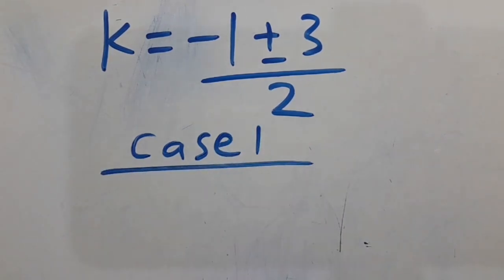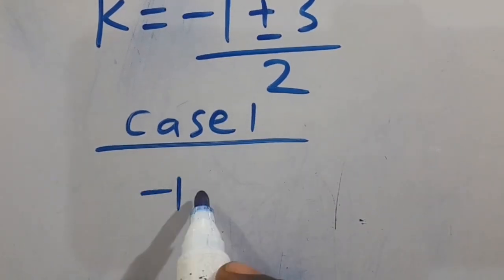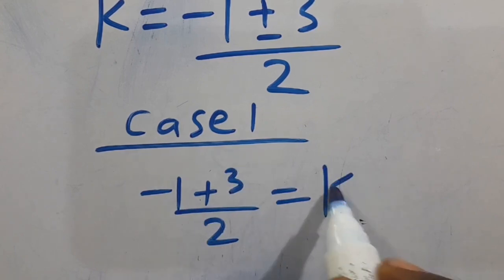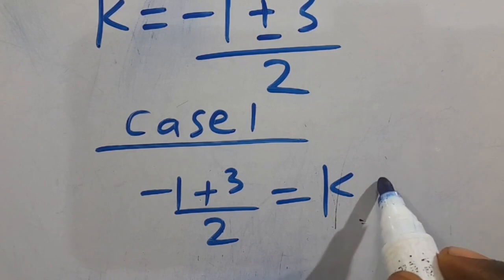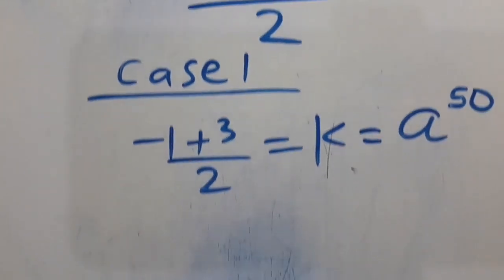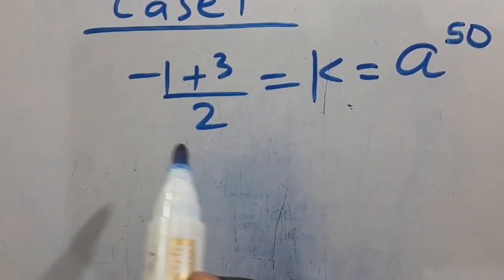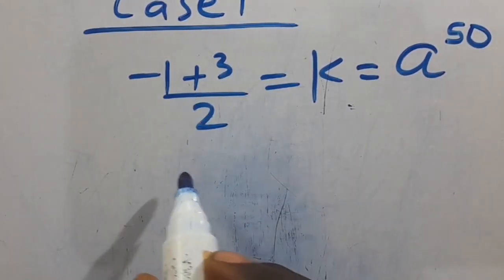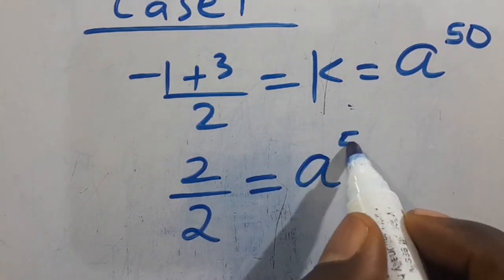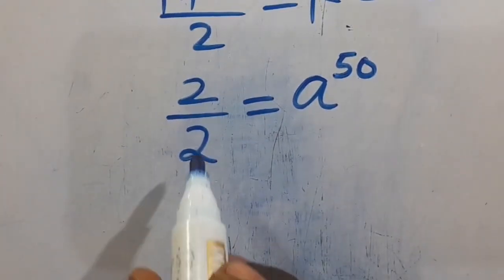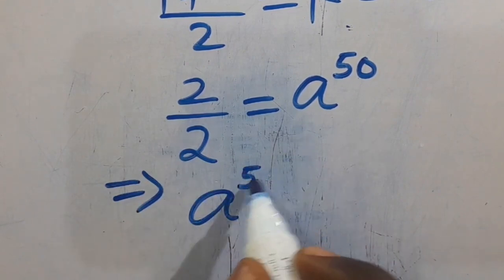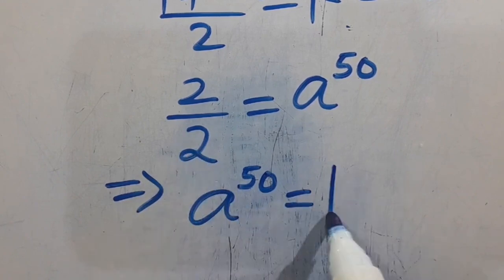Case 1: taking negative 1 plus 3 divided by 2. That equals K, and remember that K also equals A to the power of 50. So negative 1 plus 3 gives us 2, divided by 2, equals A to the power of 50. Rearranging, A to the power of 50 equals 2 divided by 2, which equals 1.